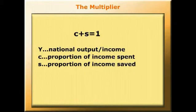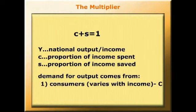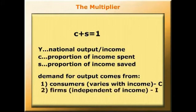And the third thing to be clear about, the demand for output comes partly from consumers and varies with income, and partly from firms for investment purposes, which we're going to assume to be independent of income, or as we say, autonomous.